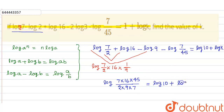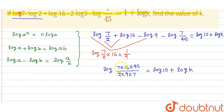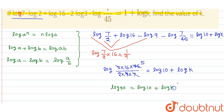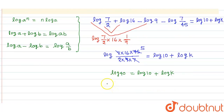The 7s cancel out, and 5 cancels with a factor of 5, leaving 16 times 5 equals 80, and 80 divided by 2 equals 40. So log 40 equals log 10 plus log k. Moving log 10 to the left side: log 40 minus log 10, and applying the quotient property gives log(40/10) equals log k.